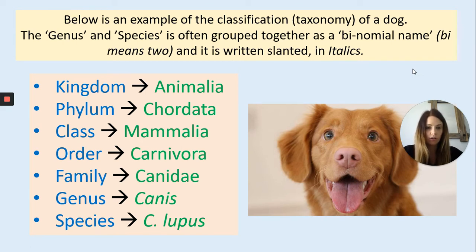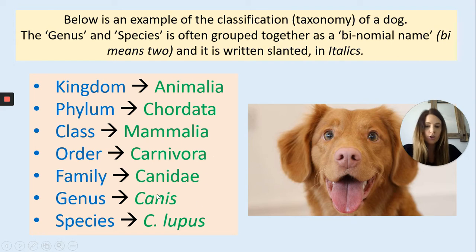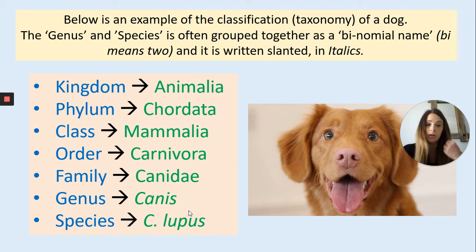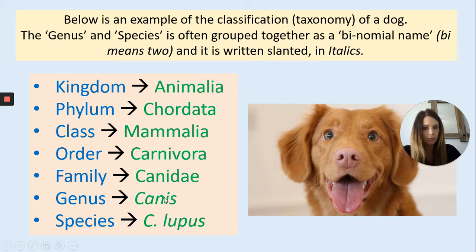Here's an example using a common household dog. The dog would be in the animalia kingdom. Some of these words might be familiar — you might have heard of 'mammal,' hence the link to the class of mammalia, or 'carnivore' because it's in the order of carnivora. The last two levels — genus and species — are what we use to state the species of something. For example, a human is homo sapiens. A dog is canis lupus — you might have heard of 'canine,' which is where the 'canis' bit comes in. When we write this, we write it in italics because it's the proper binomial name.